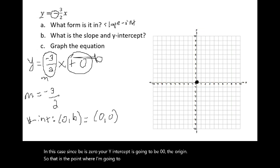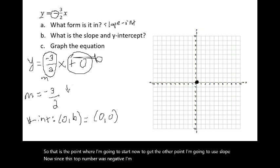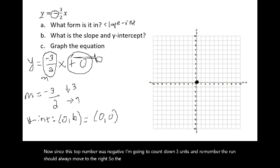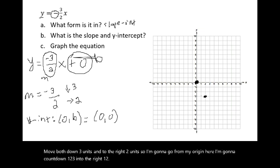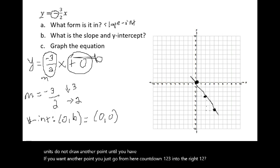Starting at the origin, use the slope to get the second point. Since the top number is negative, count down 3 units. The bottom number is 2, so count to the right 2 units. Do not draw a point until you've moved both down 3 and right 2. For a third point, repeat from the new position. Then draw a line between the points with arrows on both ends.